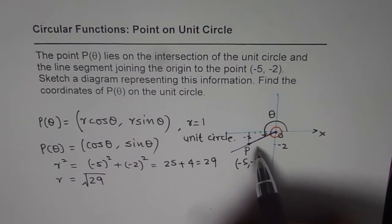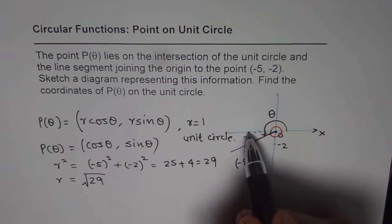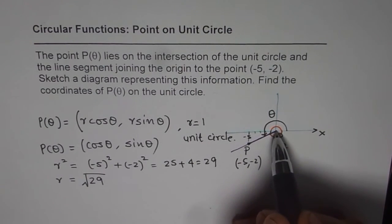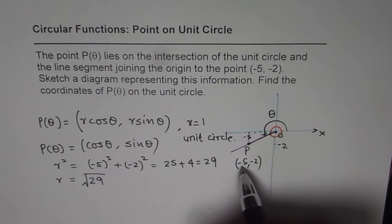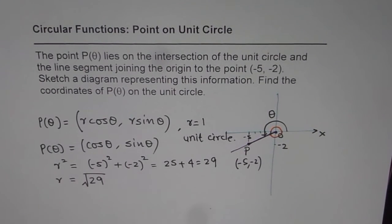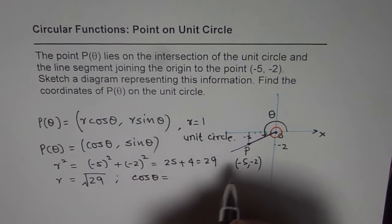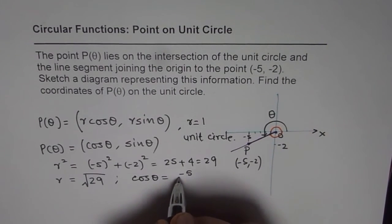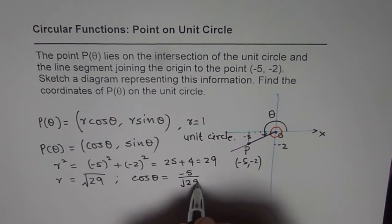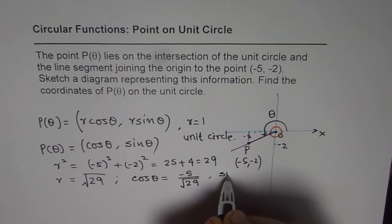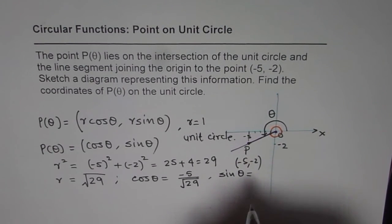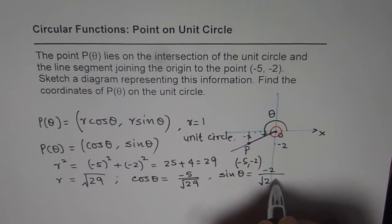Now what is cos θ? Cosine θ is the adjacent side over hypotenuse. The adjacent side is -5, the x coordinate. So now we can write down cos θ and sin θ. From here we have cos θ equals to -5 over √29 and sin θ is equal to -2 over √29.